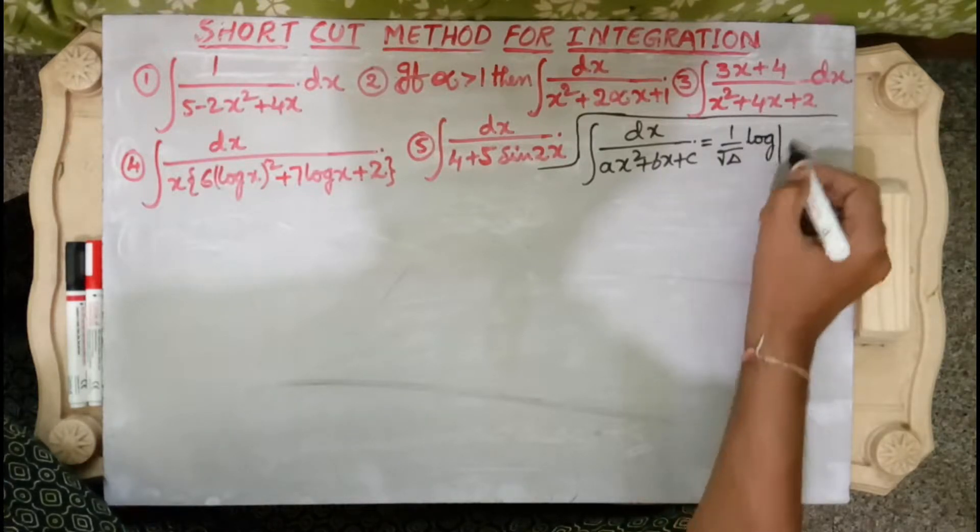Fourth problem: integral dx by x(6 log²x plus 7 log x plus 2). Let log x equal t; then differentiating both sides with respect to x gives 1 by x dx equal to dt. Substituting, the integral becomes integral dt by (6t² plus 7t plus 2).